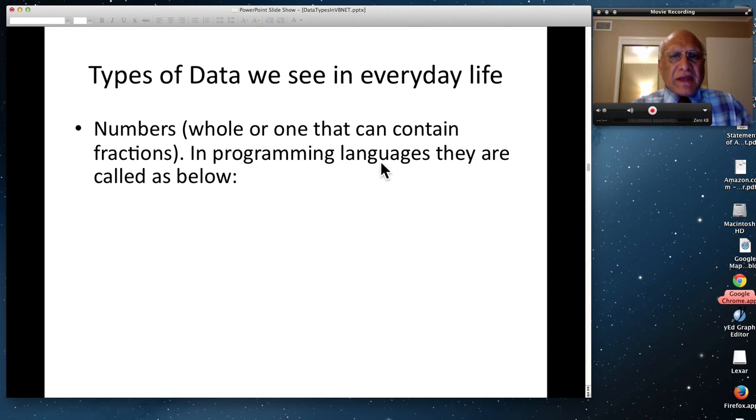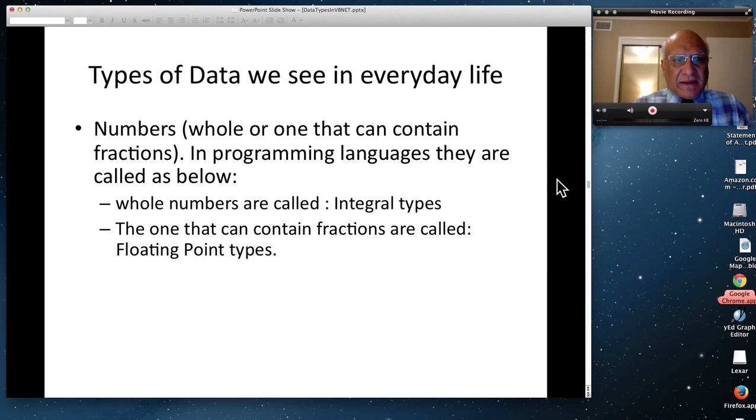In programming languages, they are called as below. Whole numbers are called integral types. Integral does not mean integer. Integer is different type. Integral means that integral type is the whole number name in computer science. Computer scientists don't say whole number, they say integral types. And then, the other type that can contain fractions are called floating point types. So integral types and floating point types are computer science names.